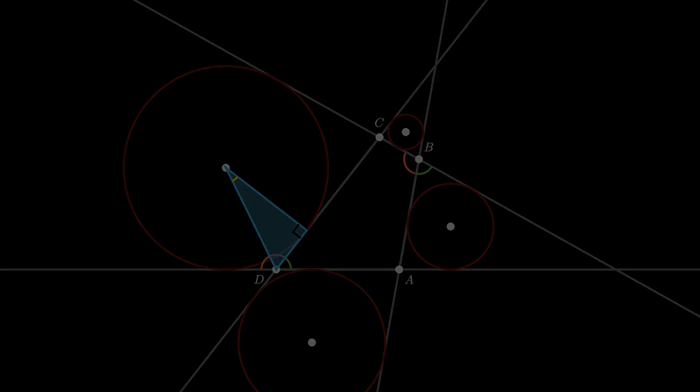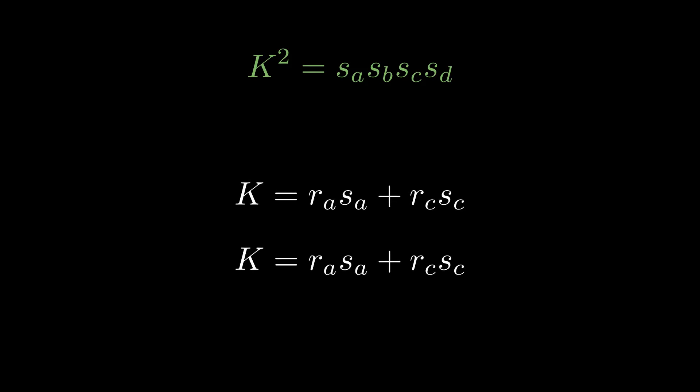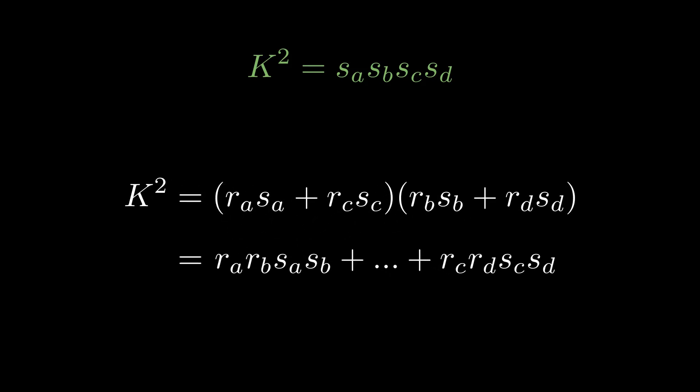Recall that we want to show that this area K equals the square root of the product sa, sb, sc, sd, or that K squared equals sa, sb, sc, sd. Since we want a K squared term, it makes sense to multiply our two expressions for K, seen here, yielding this formula for K squared. What we need here is for the R terms to somehow disappear, so the whole sum can collapse into a single term. Here's how we're going to make that happen.